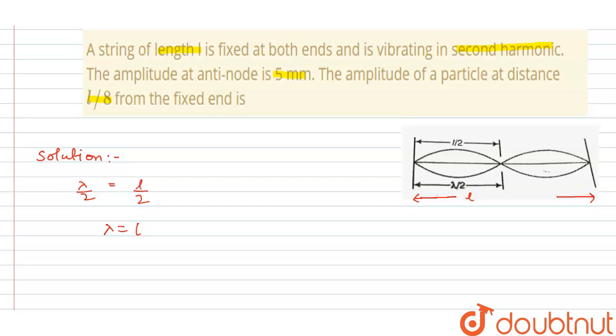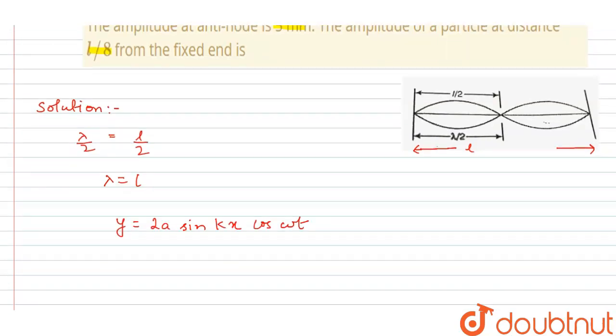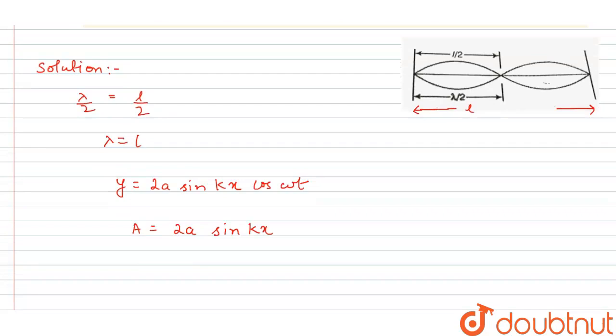The equation when the wave is stationary is Y equals 2A sin kx cos omega t. Now, the amplitude is equal to 2A sin kx.